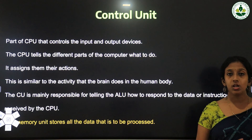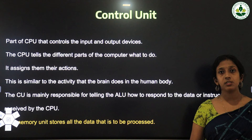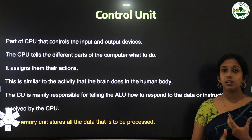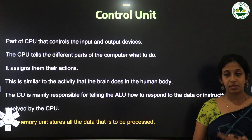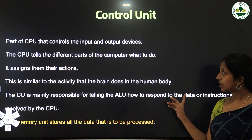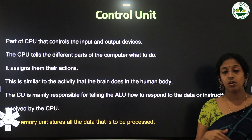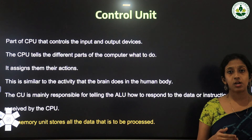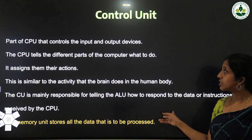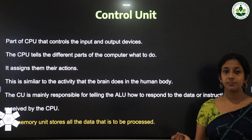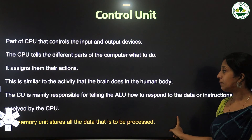The CU is mainly responsible for telling the ALU how to respond to the data or instructions received by the CPU. The ALU does all the arithmetic and mathematical operations, but the Control Unit is responsible for telling the ALU what to do and how to handle the data received.